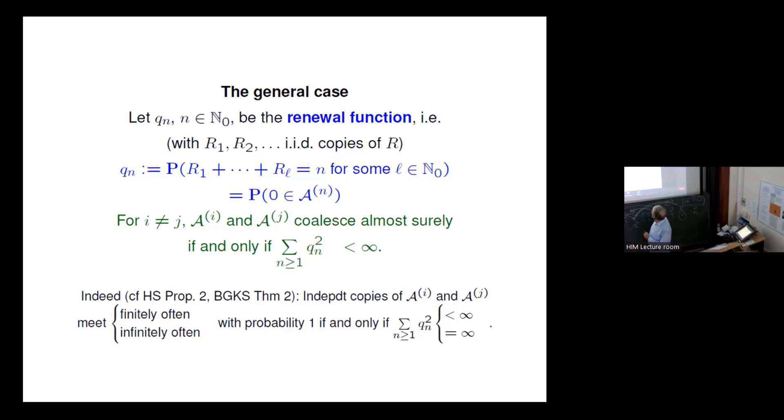And so there is a little observation which says that those two ancestral lineages, A_i and A_j, they coalesce almost surely if and only if the sum of the squares of this renewal function, sum of q_n squared converges. And indeed, this is in both the papers of Hammond and Sheffield and Blath and co-authors, and the key is that if you take independent copies of those ancestral lineages, then they meet finitely often with probability one if and only if this sum of the q_n squares is finite and they meet infinitely often if and only if the sum of the q_n squares is infinite.